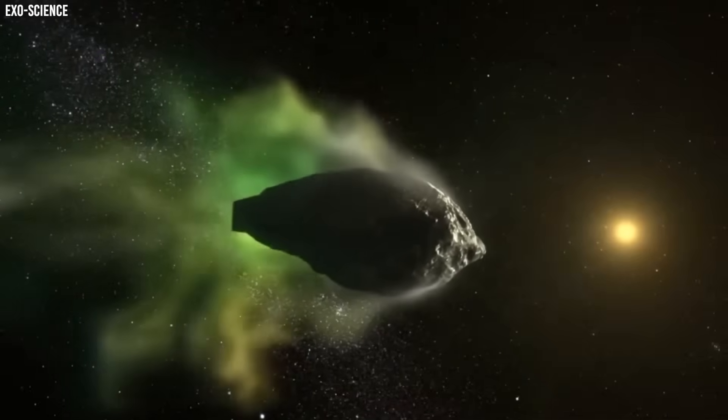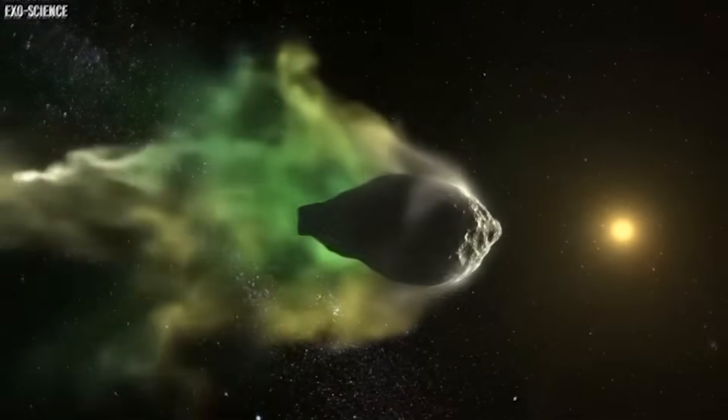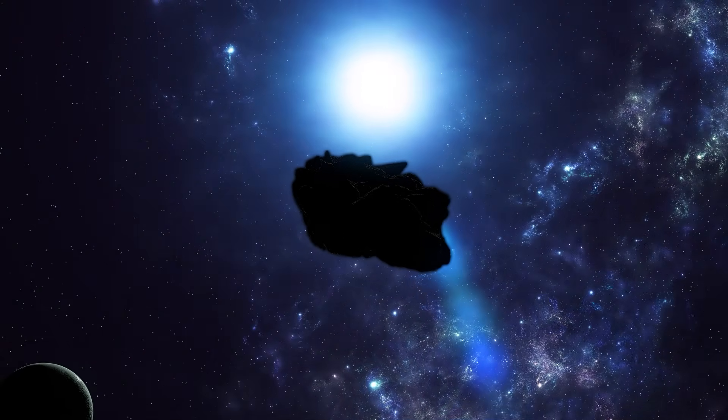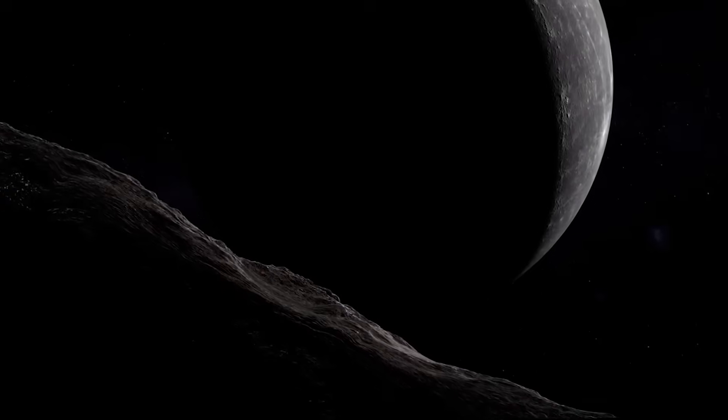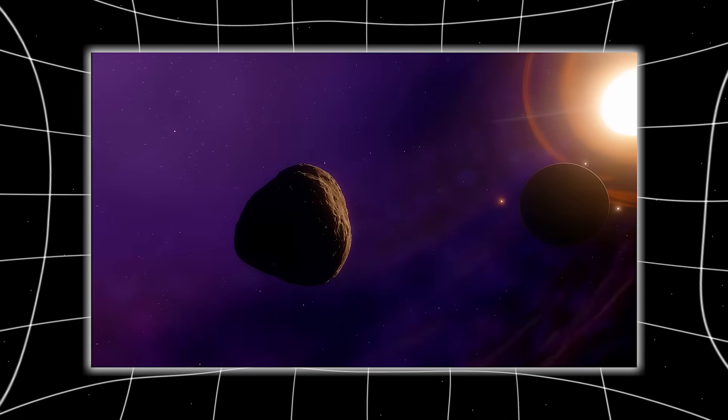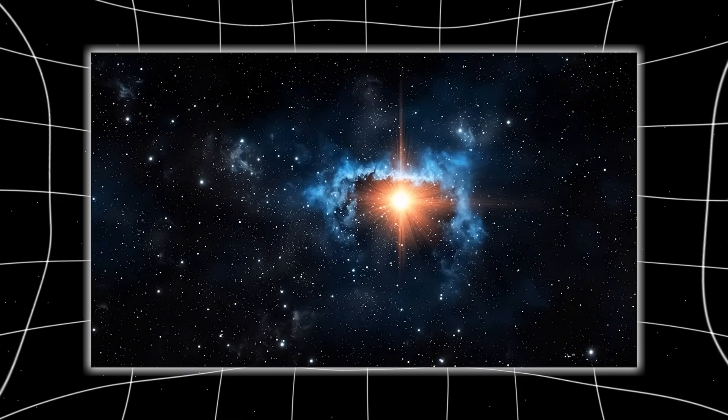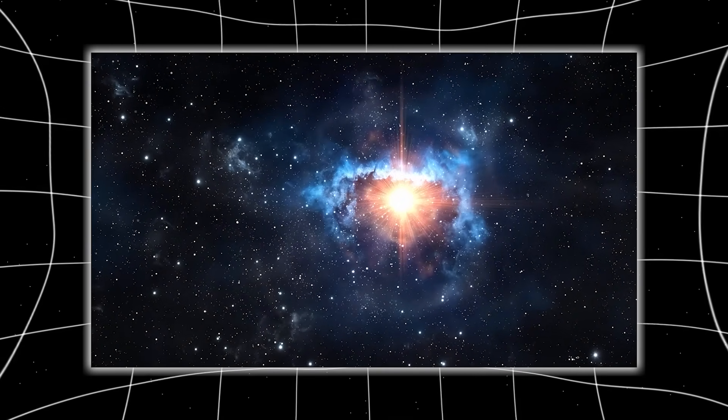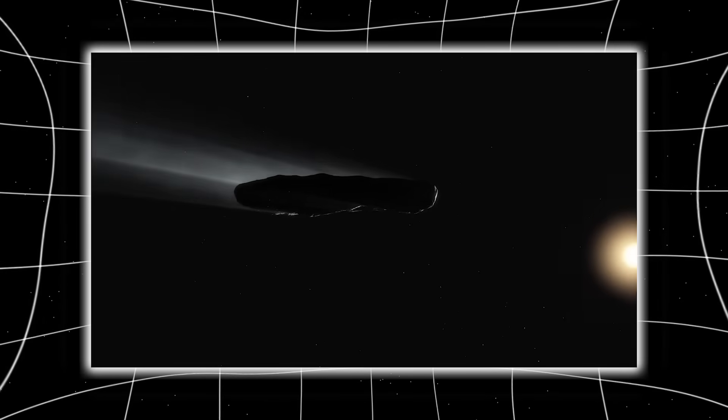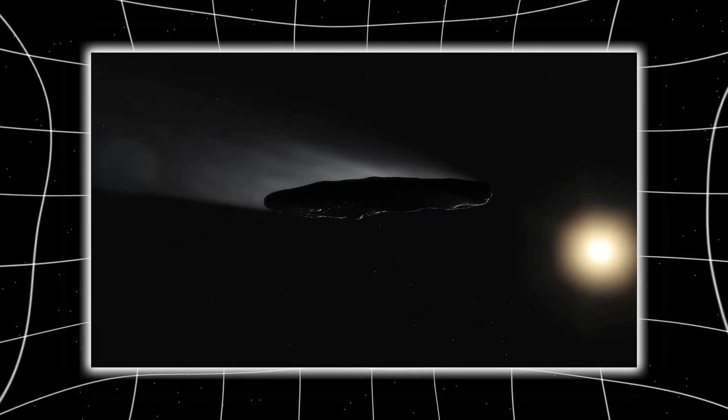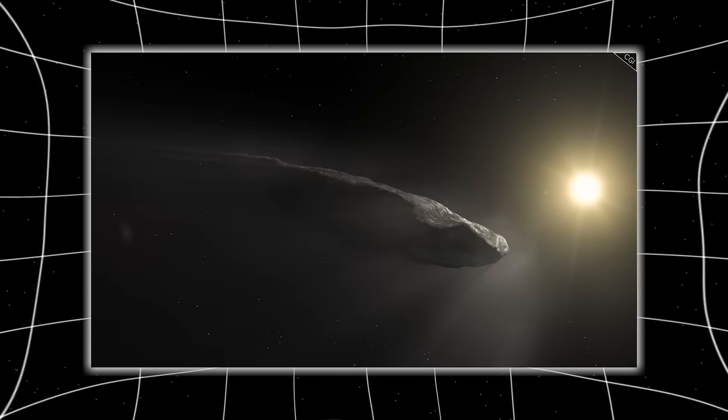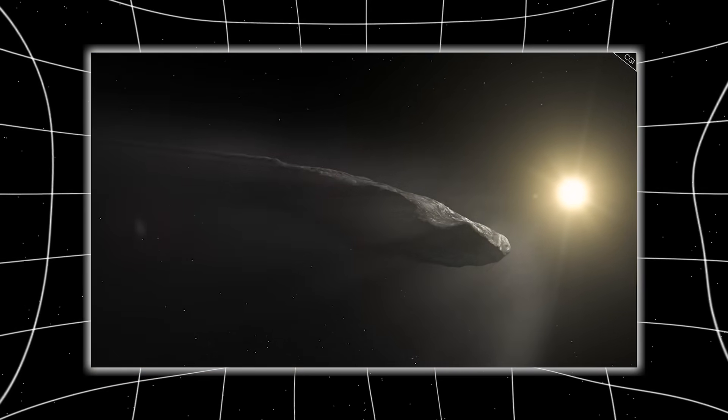Orbital analysis confirms non-gravitational forces acting selectively, creating stable optical structures that defy classical comet models. The pulse ties it all together, a rhythmic signature of an active interior rather than a dying surface. Taken as a whole, 3i Atlas is best understood not as a visitor carrying messages, but as a sample, a naturally delivered fragment of another planetary system that has wandered into ours by chance.